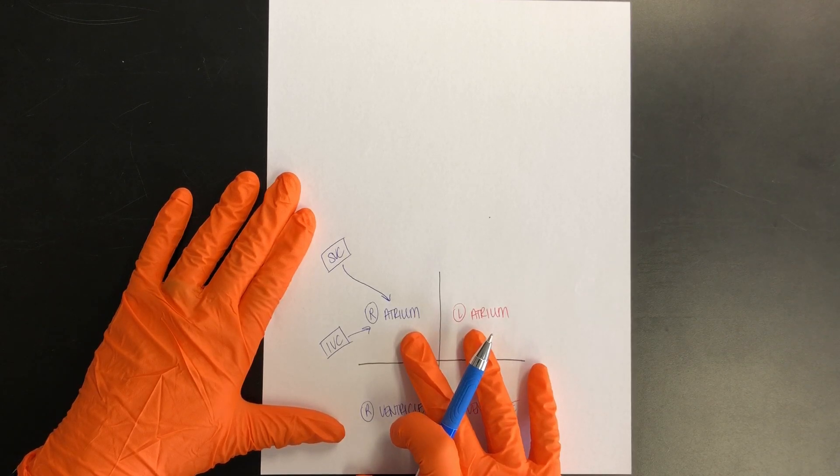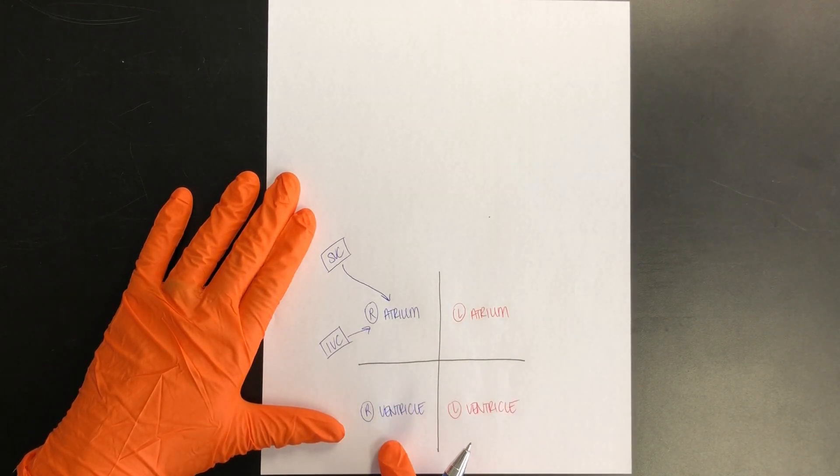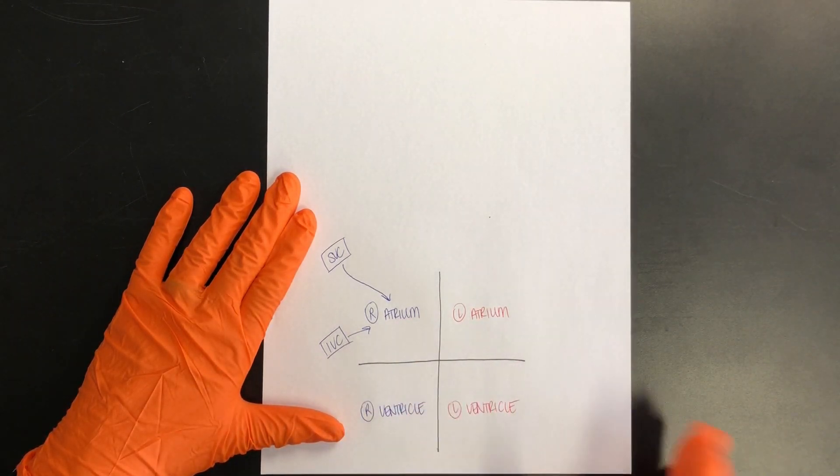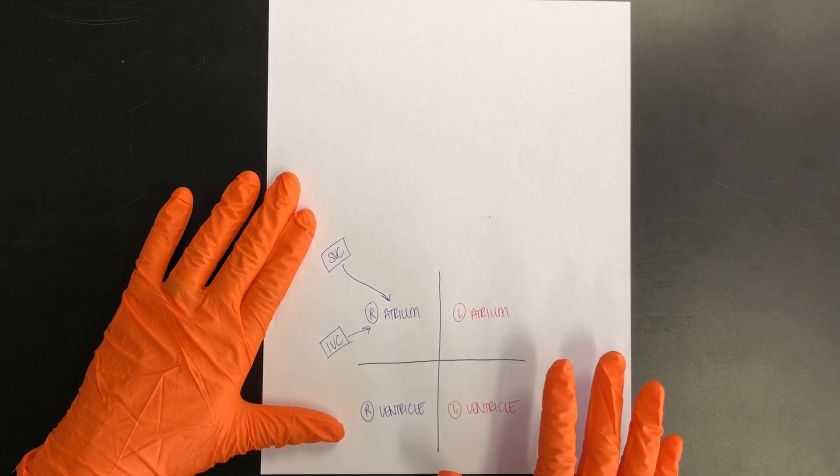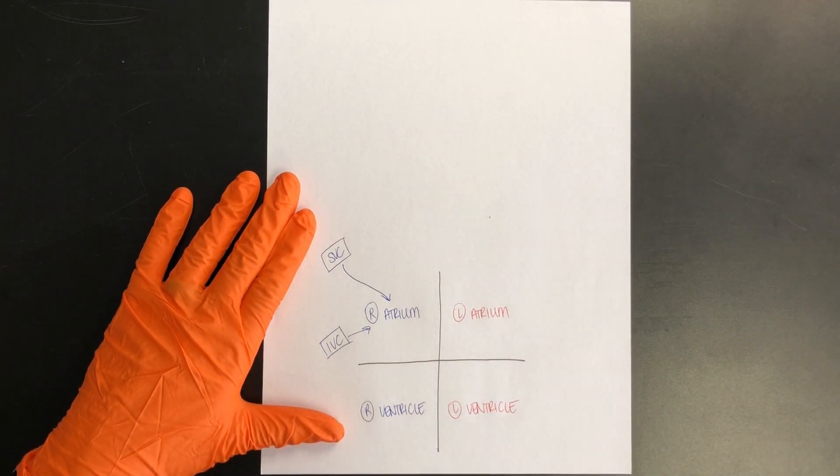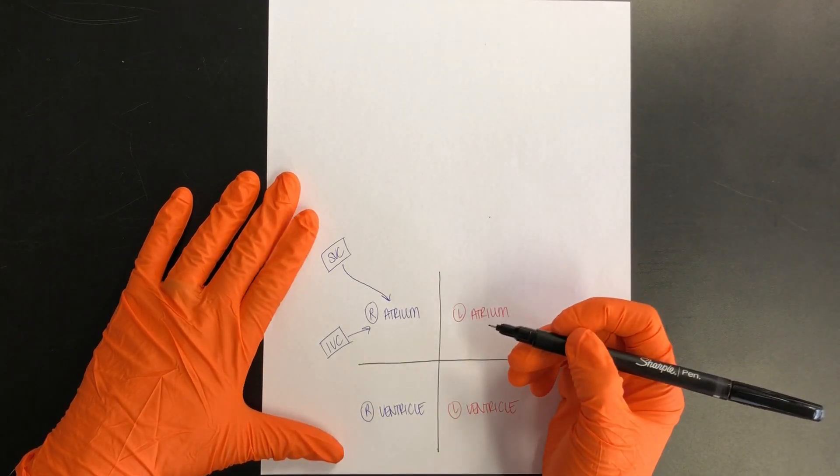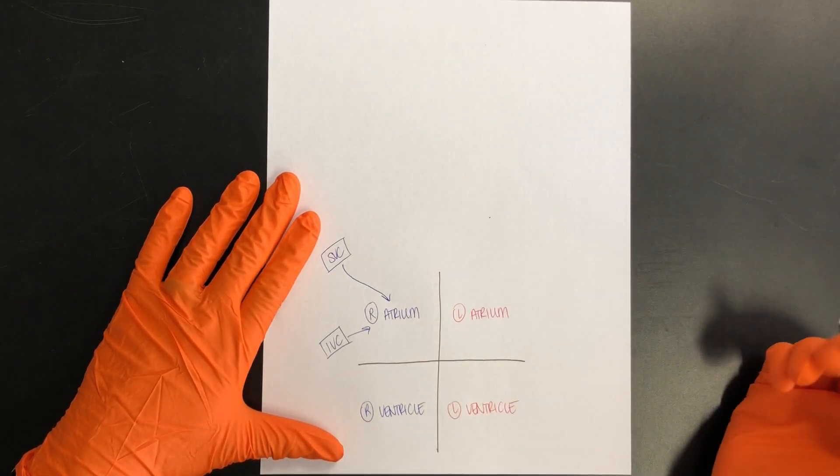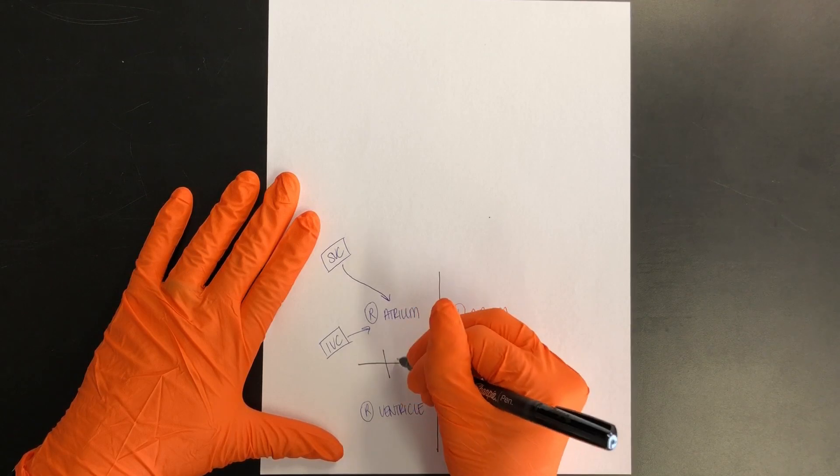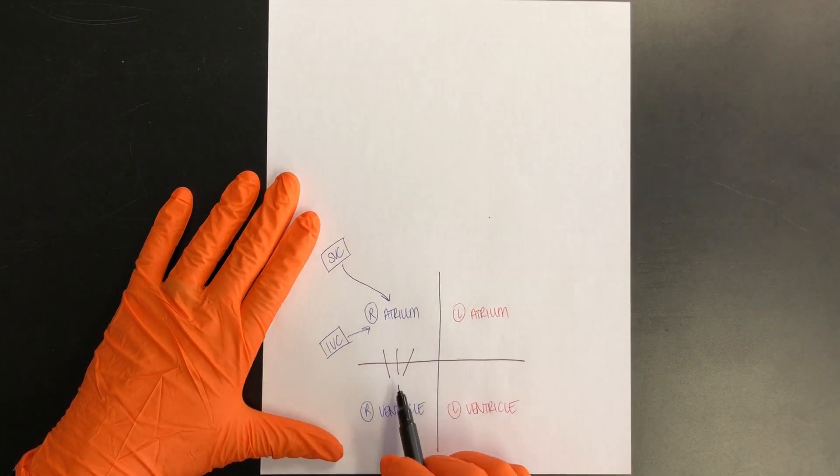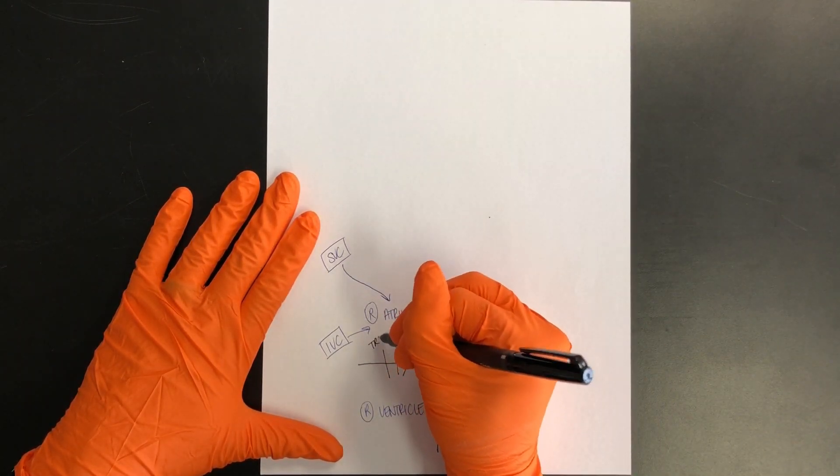From the right atrium, we know we have to ultimately get to the right ventricle. But if you think of the chambers as rooms, you'll know that we can't just go from room to room. We need a doorway. So what are the doorways? Those are the valves. So take your pen, and let's draw our first valve, and that will be the tricuspid valve.